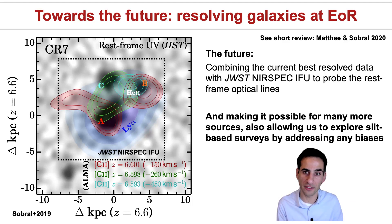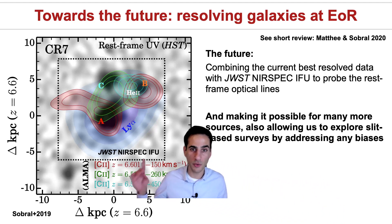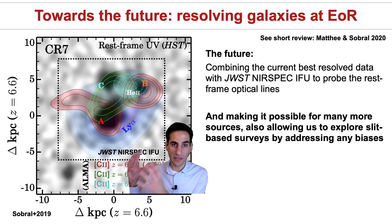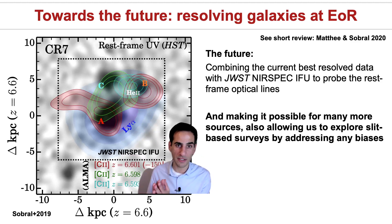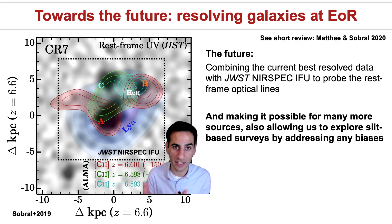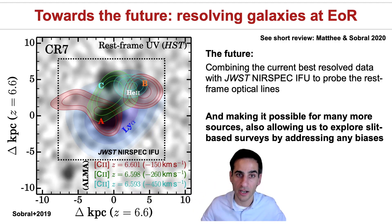With JWST finally launching at the end of the year and specifically with the NIRSpec IFU being perfectly suited to tackle these sources, we'll finally be able to study them, measure their metallicities — even resolved metallicities — find even fainter sources, measure H-alpha flux to determine Lyman-alpha escape fractions, and measure the intrinsic production of ionizing photons in sources like CR7 and other hosts of early ionized bubbles.